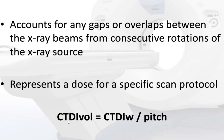CTDI volume accounts for any gaps or overlaps between X-ray beams from consecutive rotations of the X-ray source. It represents the dose for a specific scan protocol. The formula for CTDI volume is CTDI-W (weighted) divided by pitch.